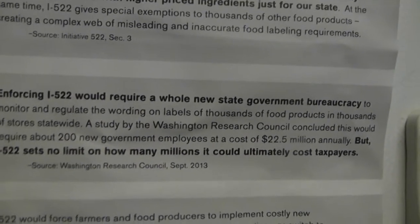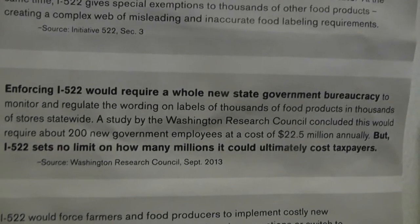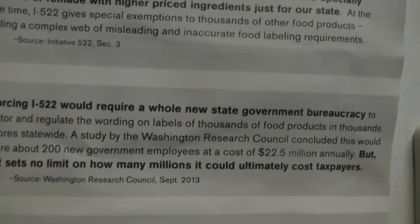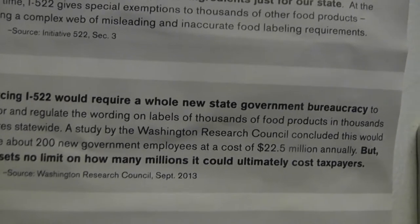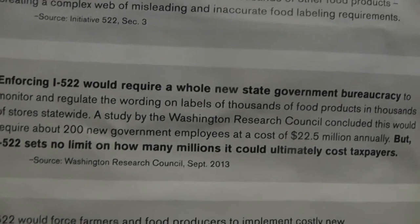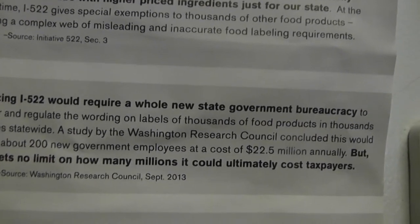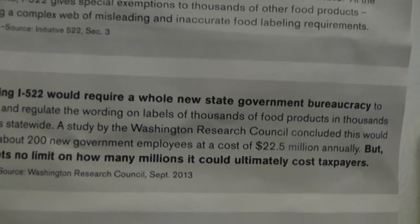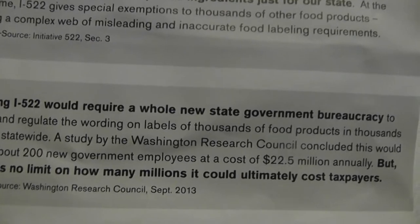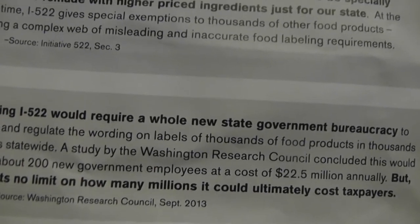Now this is small and you probably won't be able to read it, so I'm going to leave it like this and read it to you. It says enforcing I-522 would require a whole new state government bureaucracy to monitor and regulate the wording on labels of thousands of food products in thousands of stores statewide. A study by the Washington Research Council concluded this would require about 200 new government employees at a cost of $22.5 million annually.